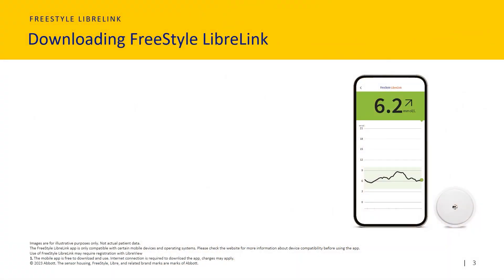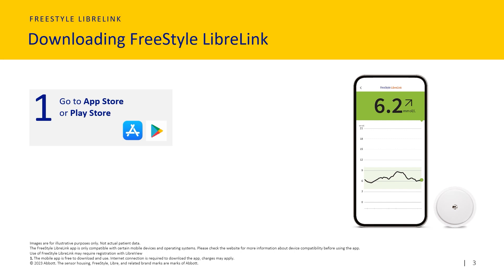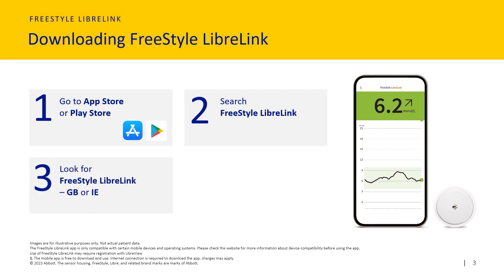When you start using the FreeStyle Libre 2 system, the first thing you will need to do if you are going to be using your smartphone is to download the FreeStyle LibreLink app on your iPhone or Android phone from the App Store or Google Play Store. Go to the App Store or Play Store and search FreeStyle LibreLink. Look for FreeStyle LibreLink GB or IE, then press Get or Install. The app is free to download and use.